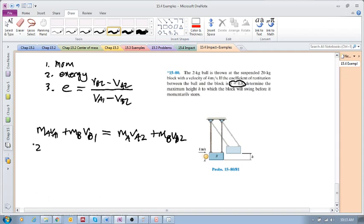What do we get? We get 2 kilograms for A and the velocity is 4—remember we're taking right as positive—and then the block is stationary, so zero velocity, no momentum. Then we're going to have 2 times vA2, we don't know what the velocity of A is after impact, and we've got 20 kilograms times vB2 because we also do not know what the velocity of B is right after impact. We've got two unknowns.